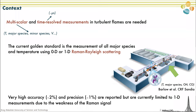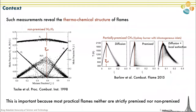Multi-scalar and time-resolved measurements in turbulent flames are needed, and the current golden standard is the measurement of all major species and temperature using 0D or 1D Raman-Rayleigh scattering. There are a number of groups in the world capable of doing this, and when they do, they achieve very high accuracy and precision — a couple of percent — but these very good numbers are currently limited to 1D or 0D due to the weakness of the Raman signal. These experiments are very useful because they reveal the thermochemical structure of flames.